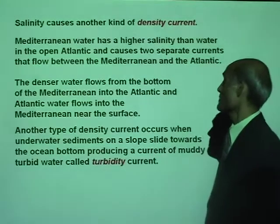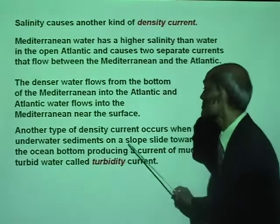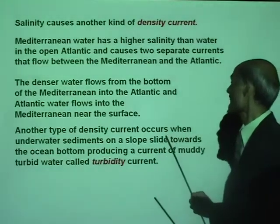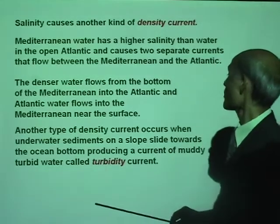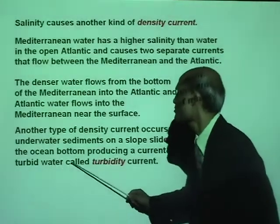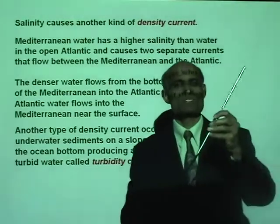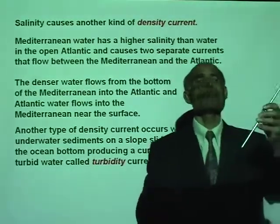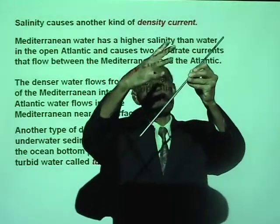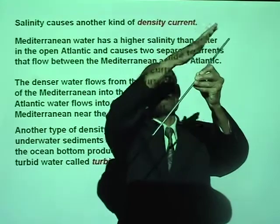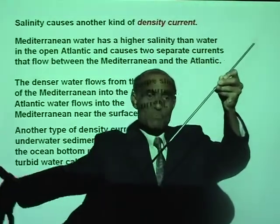Another type of density current occurs when underwater sediments on a slope slide towards the ocean bottom, producing a current of muddy, turbid water called turbidity. If there is a big slope underwater full of mud and dirt, the mud slides down — that's a turbidity current.